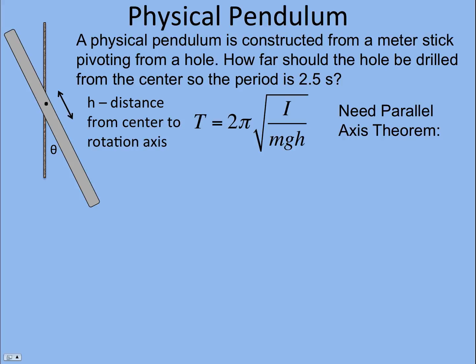So in this case, I is rotational inertia about the pivot point, not about the center. So we would need the parallel axis theorem to get rotational inertia. And the rotational inertia of a rod about its center is 1/12 ml squared. And so that's what we'll use in I.